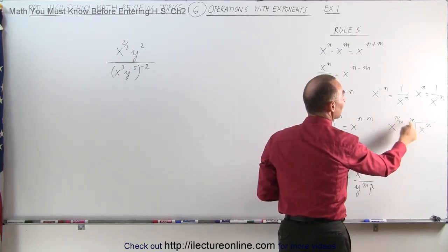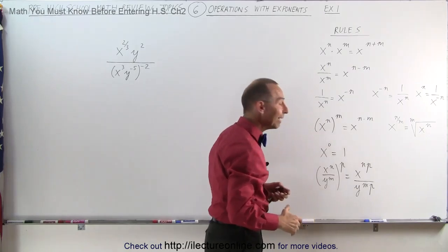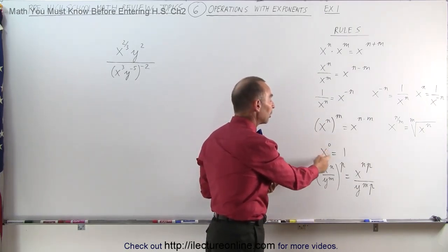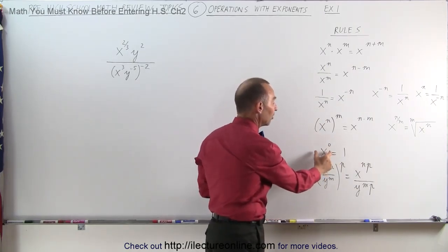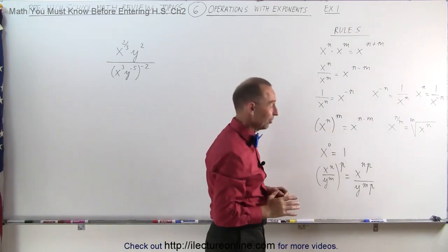If you have an exponent raised to another exponent — x to the n raised to the m power — this is equal to x to the n times m. Here you multiply the exponents.